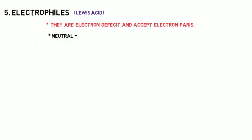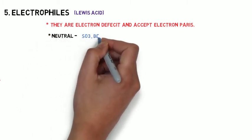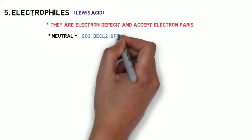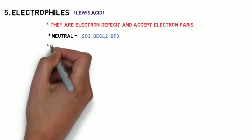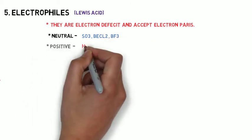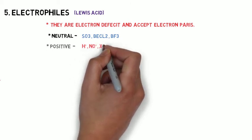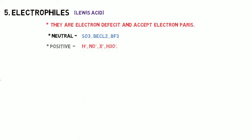The examples for neutral electrophiles are SO3, BeCl2, BF3, and positive electrophiles are hydrogen, NO and H3O+.